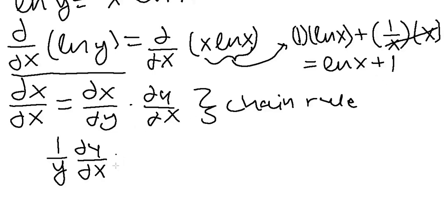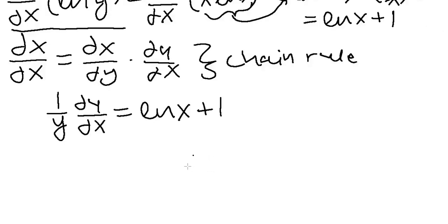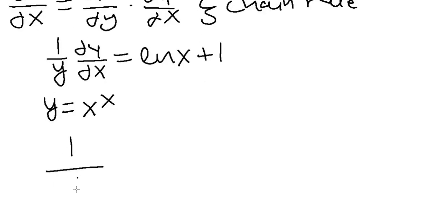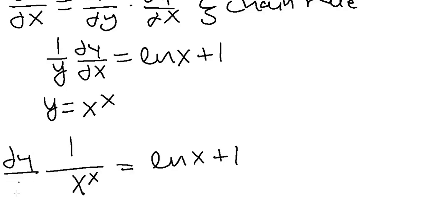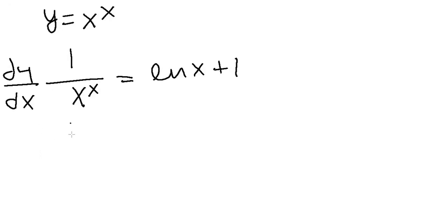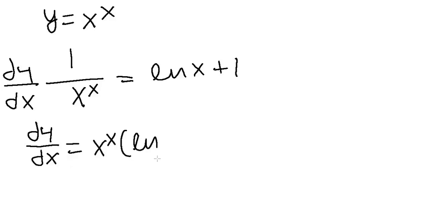So we have 1 over y times dy over dx is equal to the natural log of x plus 1. Since y is equal to x to the power x, we substitute to get 1 over x to the power x times dy over dx equals the natural log of x plus 1. Multiplying both sides by x to the power x, we get dy over dx is equal to x to the power x times the natural log of x plus 1. And here we have our final solution.